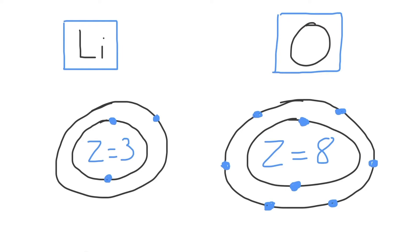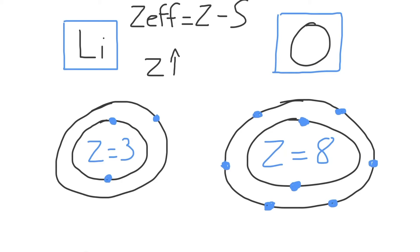We can understand this by analyzing the equation for Z effective, which is equal to the nuclear charge Z minus a shielding constant of S. As we move across a period, the nuclear charge Z will increase because the number of protons present in the nucleus increases. In lithium there are three protons, so Z equals three. In oxygen, Z equals eight. Both lithium and oxygen are in the second period, so Z increases as we move from left to right.